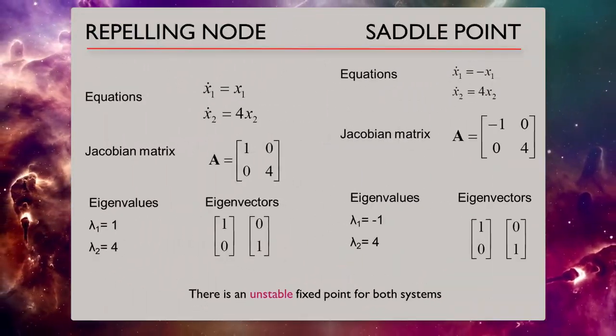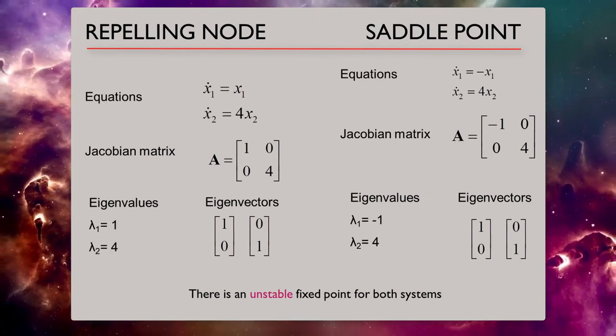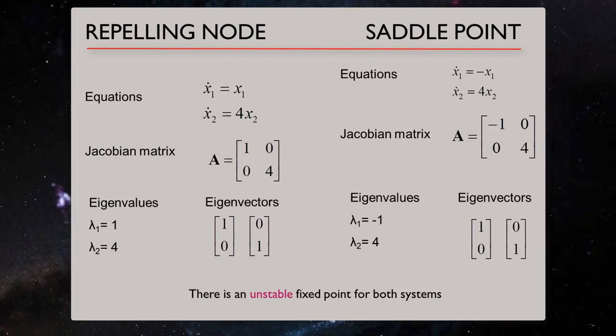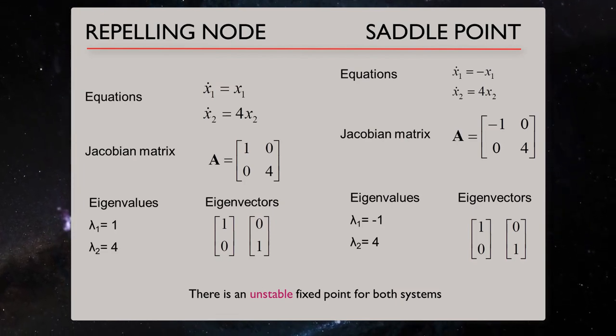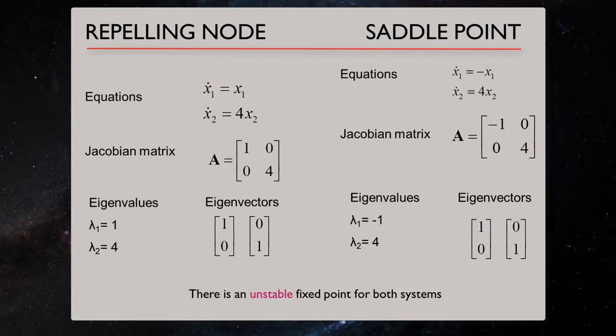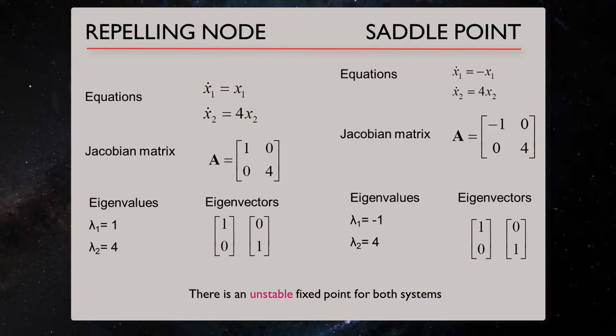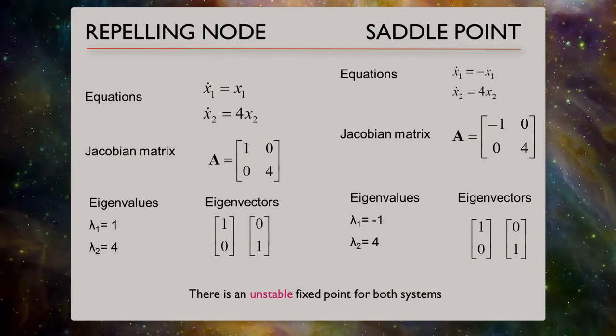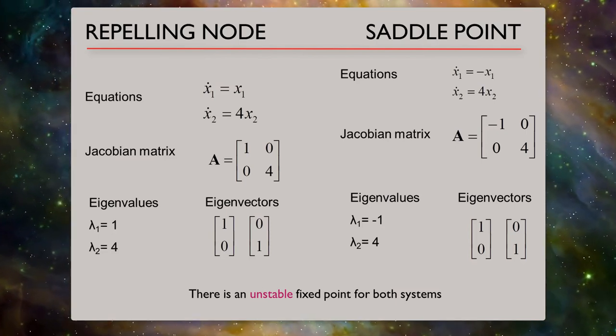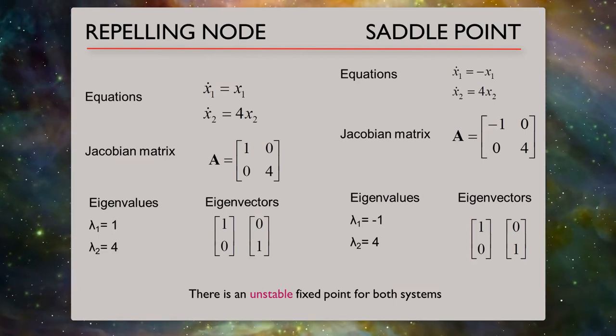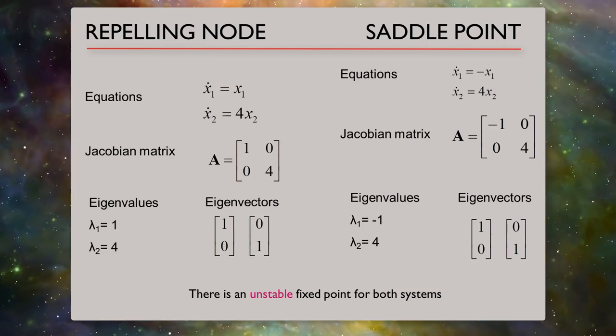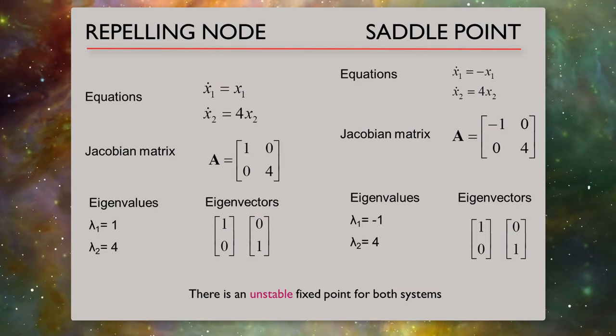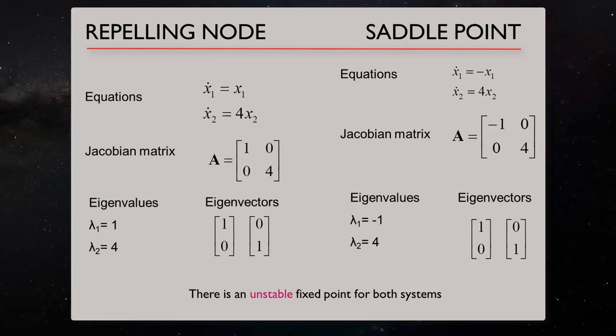Now if we change the system by removing both negative signs from both equations, we have a new system, and eigenvalues of these systems are 1 and 4, two positive eigenvalues, which means there is an unstable fixed point, the repelling node. In contrast of a tractor, a repeller is a point of state space, away from which the system will tend when it is in the surrounding region.